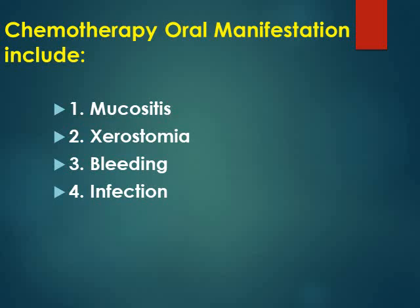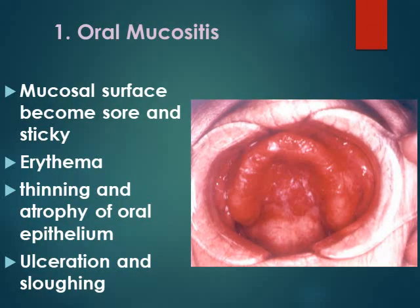The oral manifestations of chemotherapy include mucositis, xerostomia, bleeding, and infection. In oral mucositis, you will find severe redness, erythematous tissue, thinning and atrophy of the oral epithelium, followed by ulceration and sloughing.